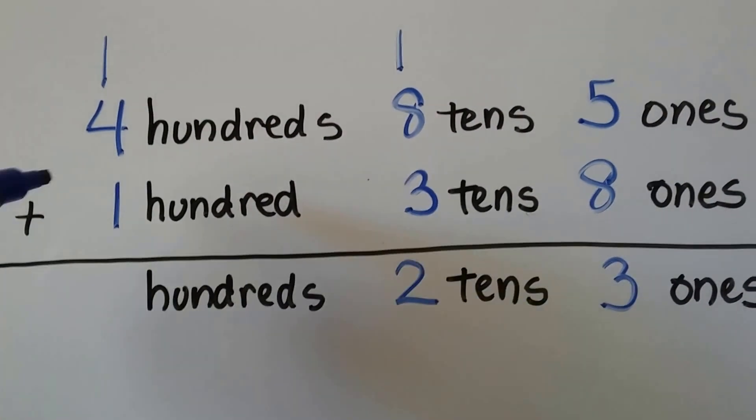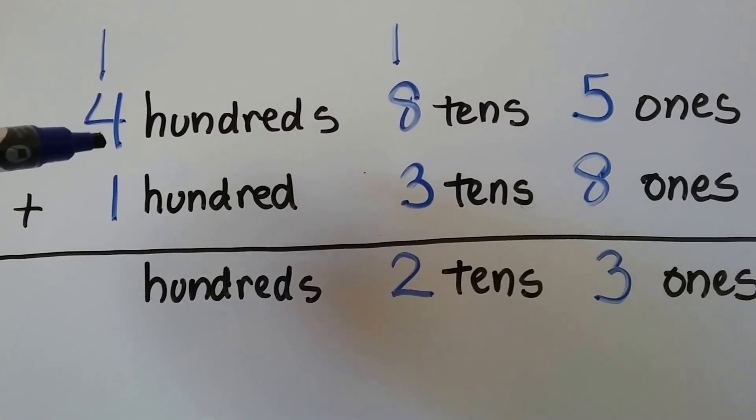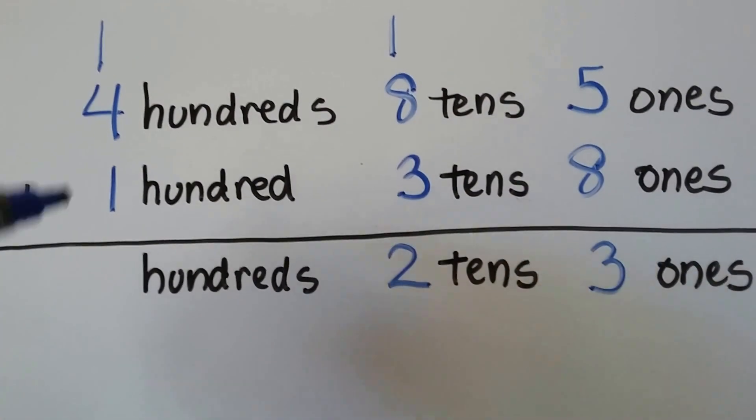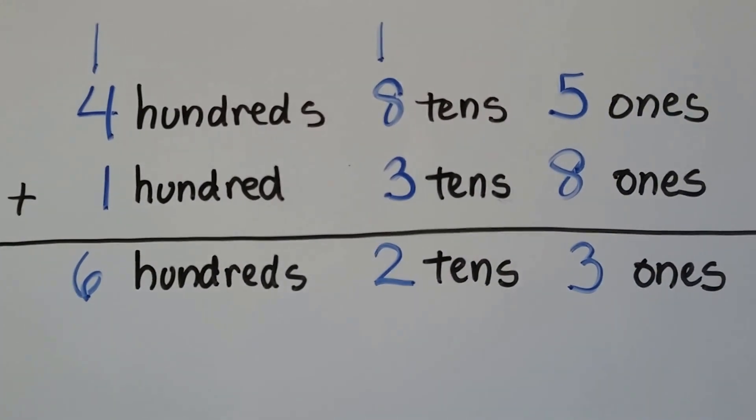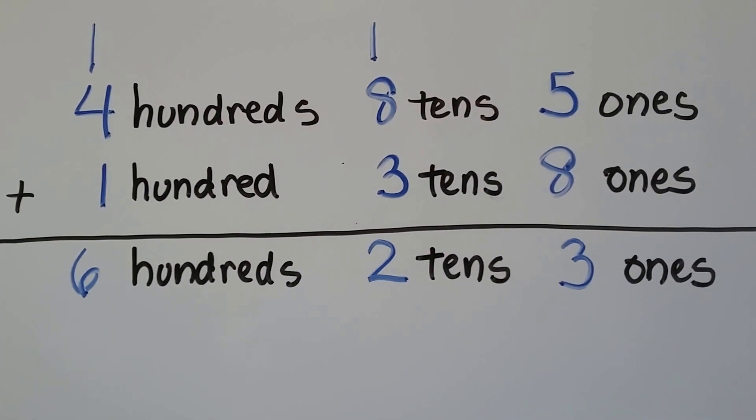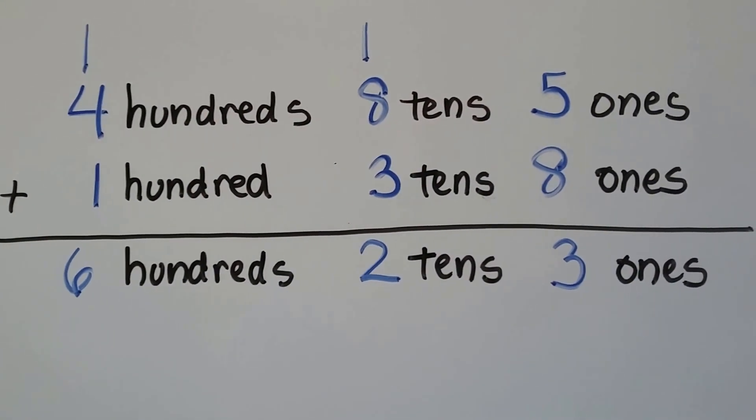Now we add the hundreds: four, five, six. Six hundreds, two tens, and three ones.